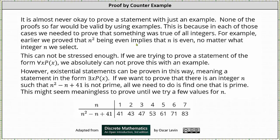For example, earlier we proved that n squared being even implies that n is even, no matter what integer n we select. This cannot be stressed enough: if we are trying to prove a statement of the form 'for every x, p of x is true,' we absolutely cannot prove this with an example.